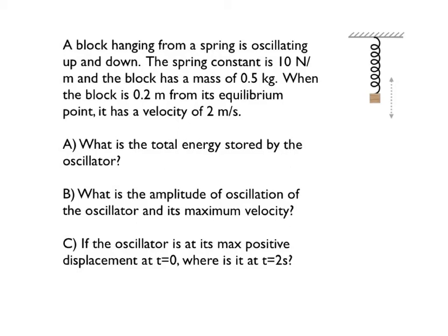In this video we're going to explore some properties of harmonic oscillators by solving a problem that has several parts. A block is hanging from a spring and oscillating up and down along the direction of the arrow shown. The spring constant is 10 newtons per meter and the block has a mass of 0.5 kilograms. When the block is 0.2 meters from its equilibrium position it has a velocity of 2 meters per second.